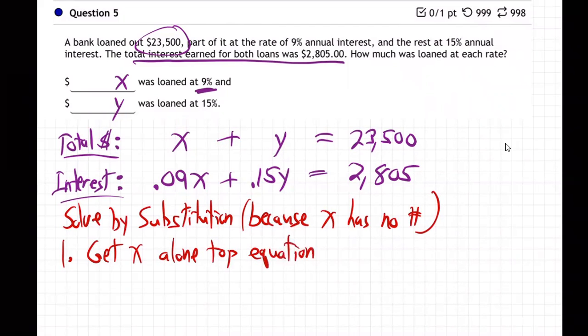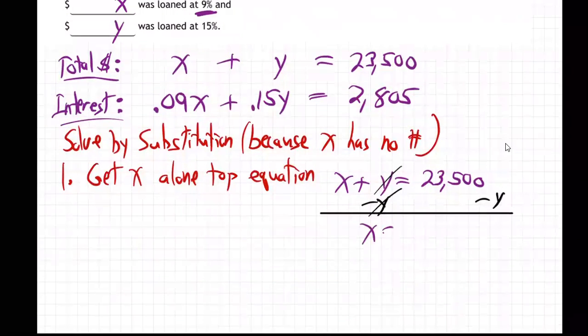So step one, get X alone in the top equation. I'll just take that top equation, get X alone. So we have X plus Y is 23,500. And we can just subtract Y from both sides, right? And so what do we get? X is 23,500 minus Y.